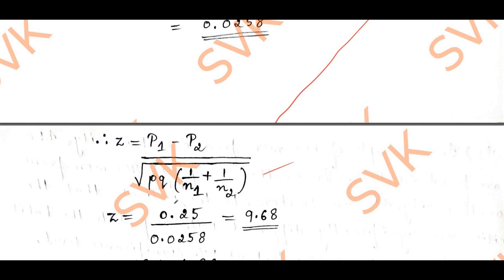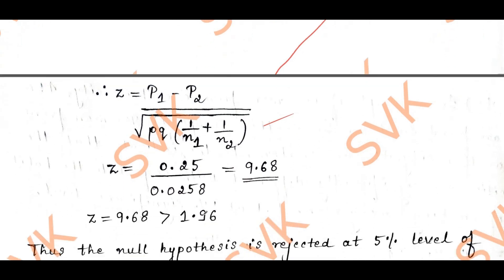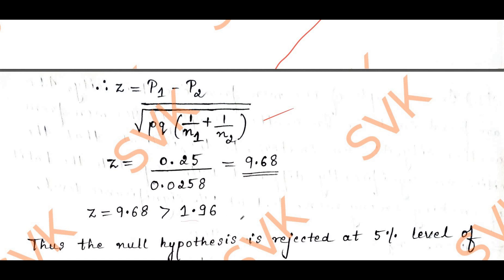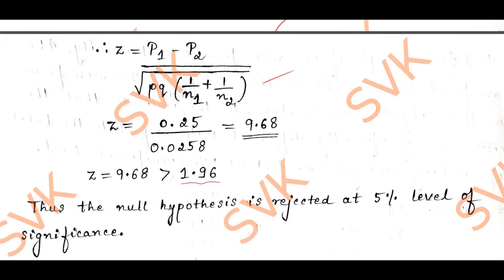Here z equals 0.25 divided by 0.0258. Simplifying, we get 9.68, which is greater than the critical value 1.96. Thus the null hypothesis is rejected at 5% level of significance. This is how to solve question number 6c.